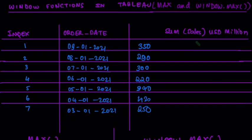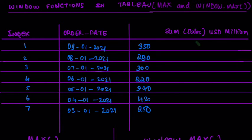For demonstration purposes, we have a mini table here that contains around seven records from the month of March to September 2021, and the corresponding sum of sales in USD million dollars. The way that a simple aggregation function — for example MAX in this case — will work is as follows.